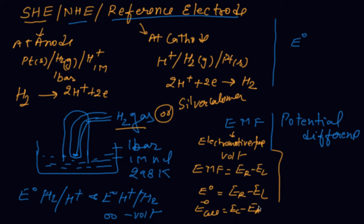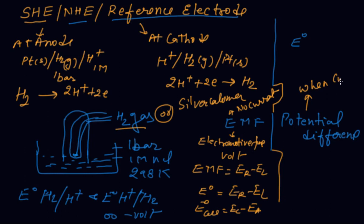The main thing is: EMF is the difference in electrode potential when no current flows through the cell. Learn it clearly. EMF is the difference in electrode potential when no current flows through the cell, whereas potential difference is the difference in electrode potential when current is flowing through the circuit.